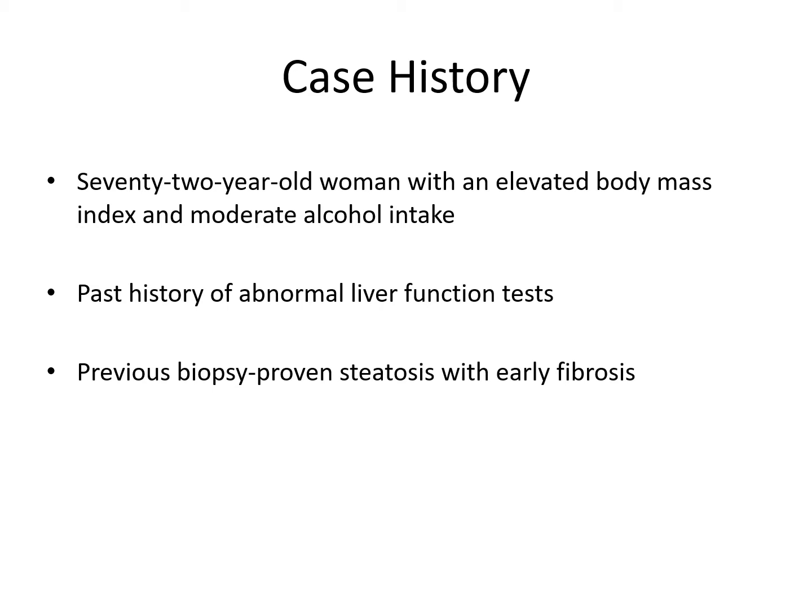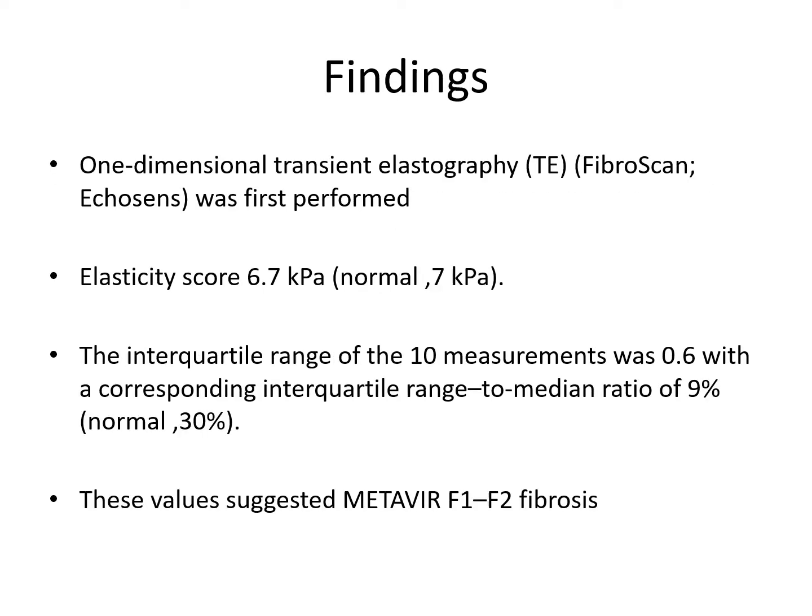She was a known hypertensive with coronary artery disease, and a previous biopsy-proven steatosis with early fibrosis was noted — the biopsy revealed stage 3 or 4 bridging fibrosis. Her present liver function test and lipid panel was normal. She was subjected to a one-dimensional transient elastography fibroscan, and the elasticity score was 6.7 kilopascals, which was within the normal range. The interquartile range of the 10 measurements was 0.6, with a corresponding interquartile range to median ratio of 9%. These values suggested METAVIR F1 to F2 fibrosis, which was not in agreement with the previous biopsy, as that would have predicted a greater degree of liver fibrosis.